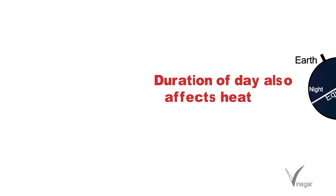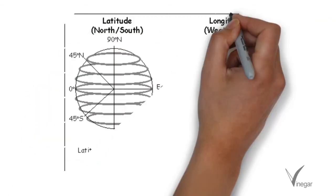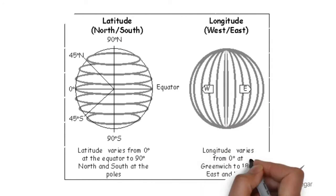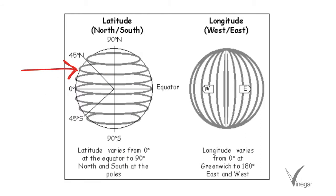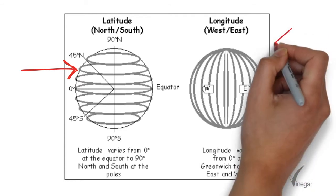Suppose we need to locate a place on earth. To do this we take help of imaginary lines called latitudes and longitudes. Lines which run parallel to the equator are called latitudes. And lines which run from north to south direction from the north pole to the south pole are called longitudes.